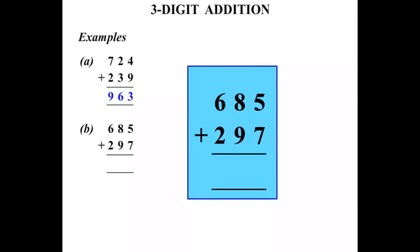685 plus 297. Again, let's bring some working space and write down the question. Again, make sure that we identify, yes, we are adding in this case.